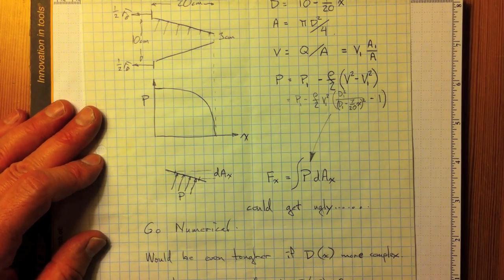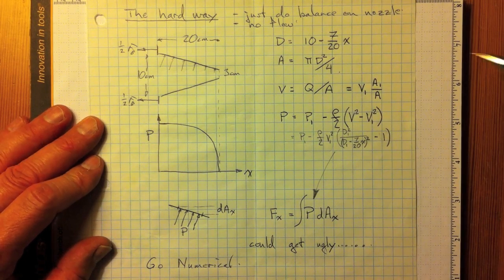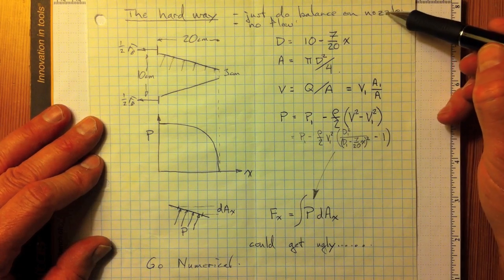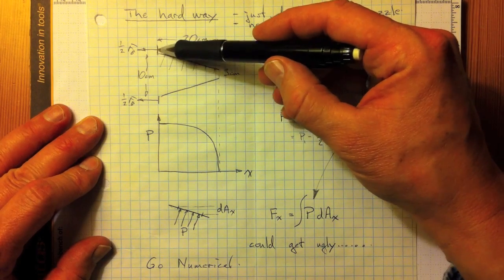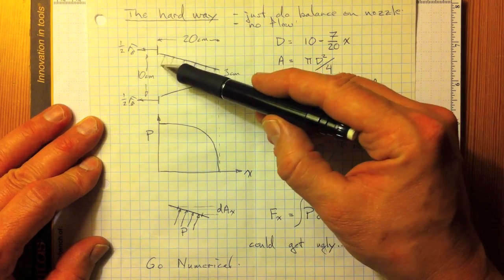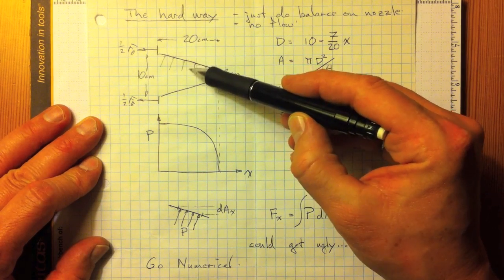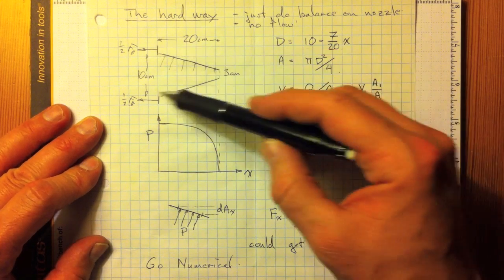If we tried to tackle this problem in a little more complicated way, we could do it the hard way, and do a balance just on the nozzle and ignore the flow. So, if we had the nozzle like this, it's got bolting force there, and bolting force there, and it's got pressure forces applied all along here. And, if we use gauge pressure, there's no pressure force anywhere else.